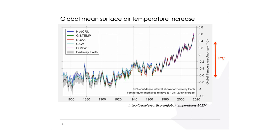They all show both interannual variability — the year-to-year changes that jiggle up and down as part of natural climate variability — and this overall increase in temperature, which is the warming attributable to human-caused forcing, primarily the emission of greenhouse gases and also land-use change. That has led to roughly a one-degree increase in global mean temperature since the pre-industrial period in the mid-1800s.